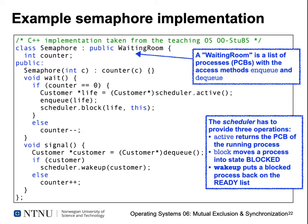Here's an example implementation of a semaphore taken from a teaching operating system used in Germany called Oostops, written in C++. Our semaphore is derived from a class 'WaitingRoom' — a list of processes with access methods enqueue and dequeue, essentially a waiting list where you can add and remove processes. The semaphore has a local variable 'counter' and two methods: a wait method (our P method) and a signal method (our V method). The wait method checks if the counter is equal to zero — if so, we're not allowed to enter the critical section.